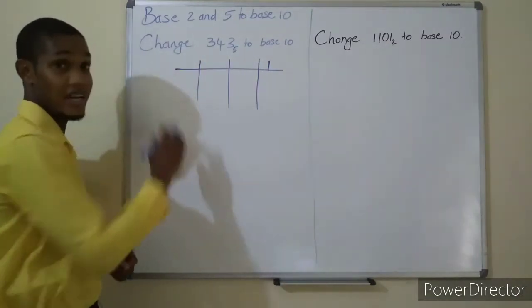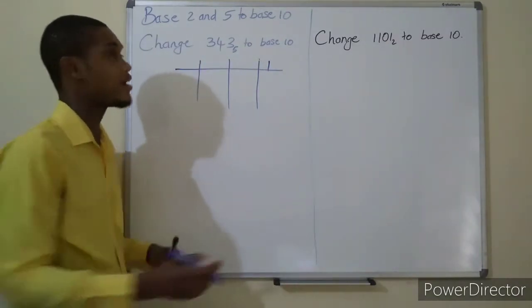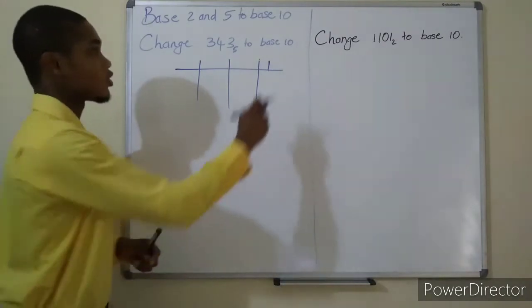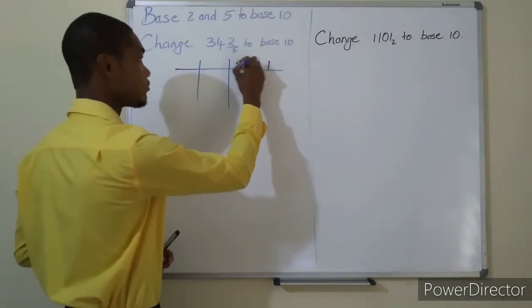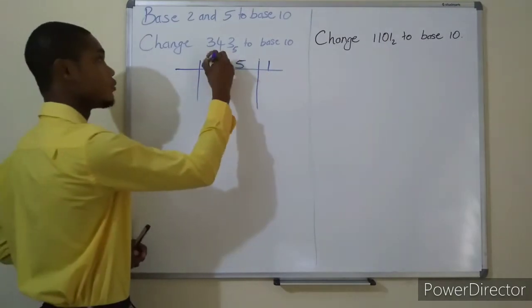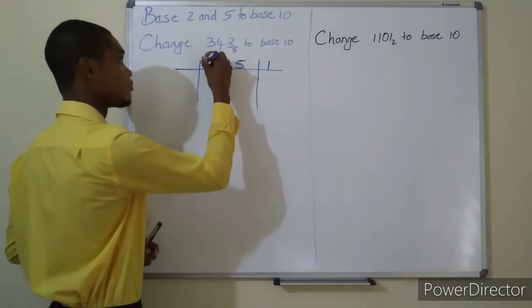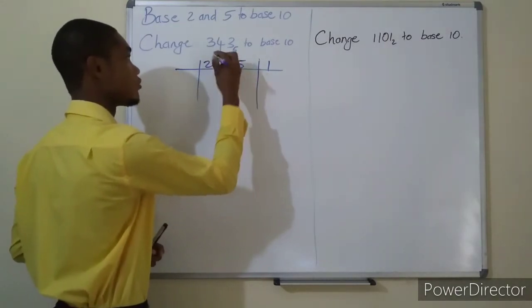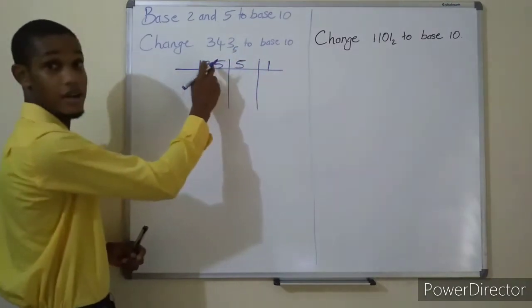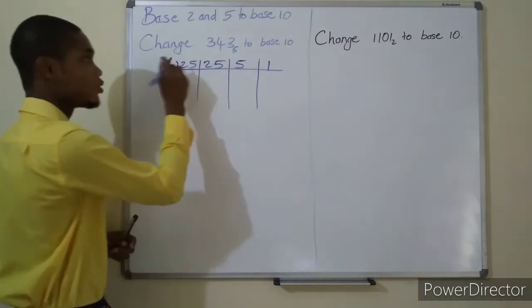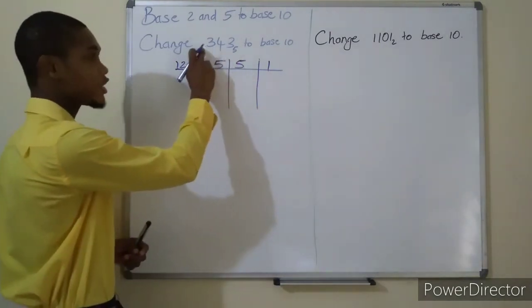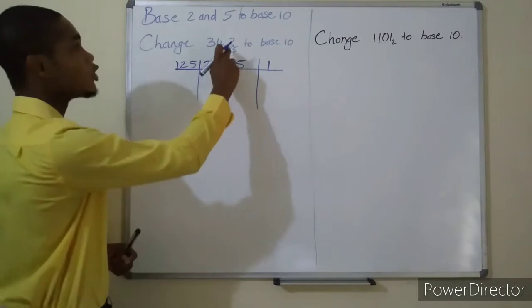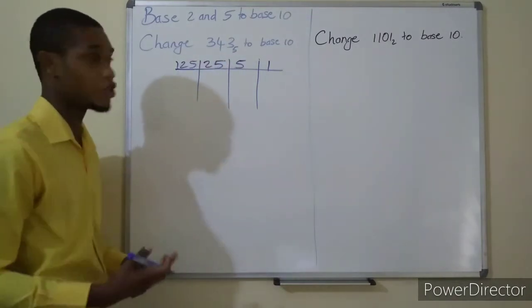Every time you go to your left now you multiply by whatever base you are in. So one, we're in base 5, so 1 times 5 gives you 5, 5 times 5 is 25, 25 times 5 is 125, and you continue multiplying by 5 going upwards until you have sufficient space on your table to hold all the numbers given in your question.